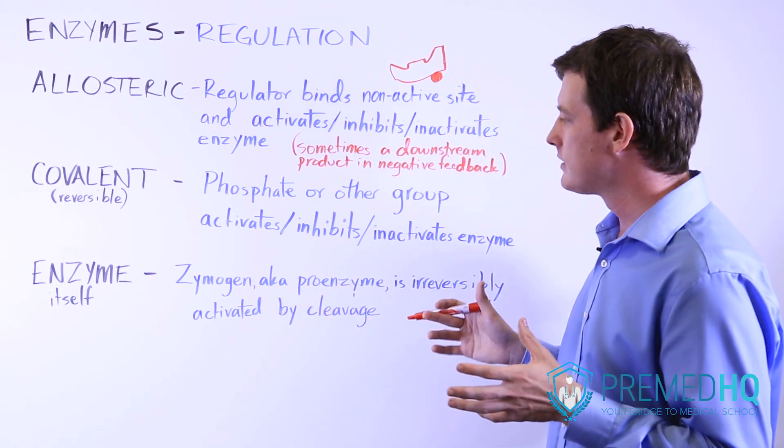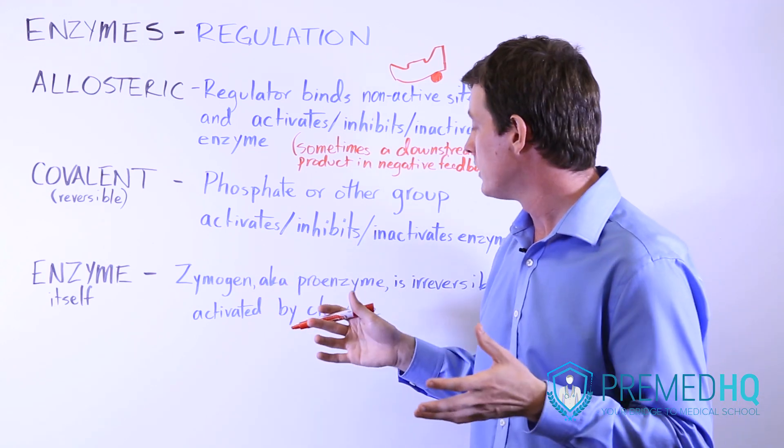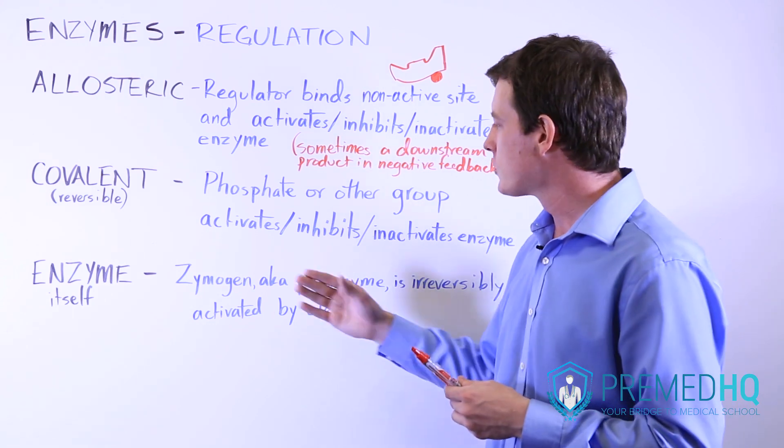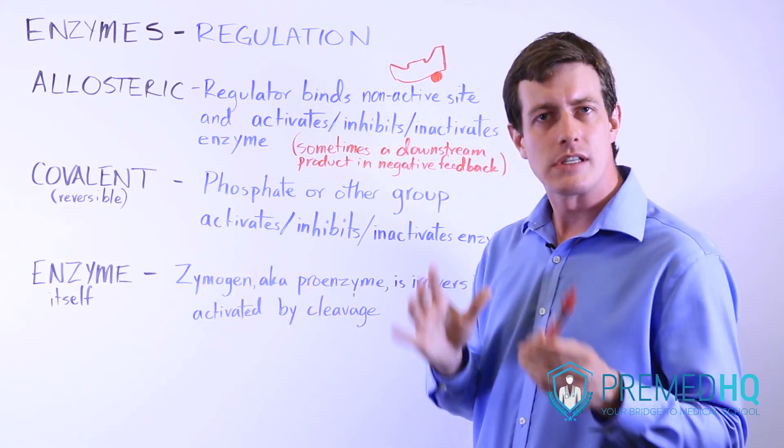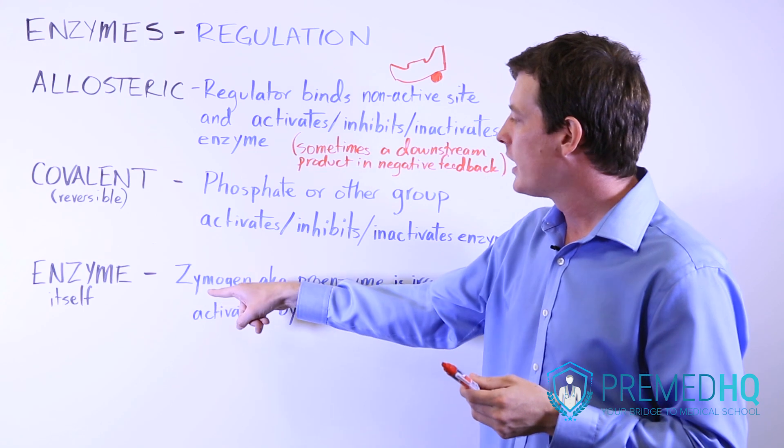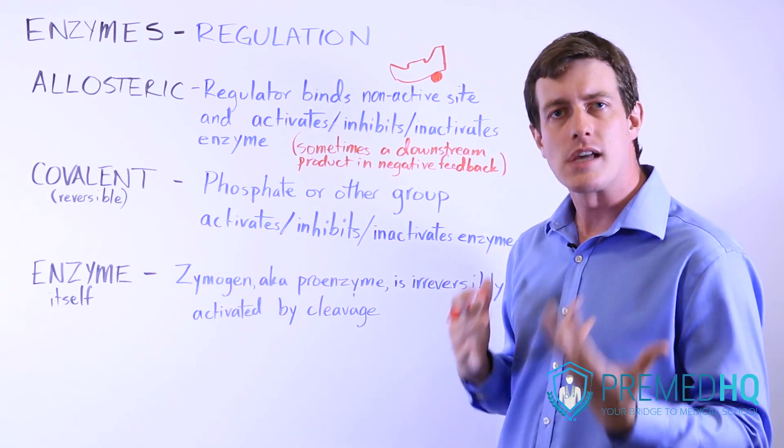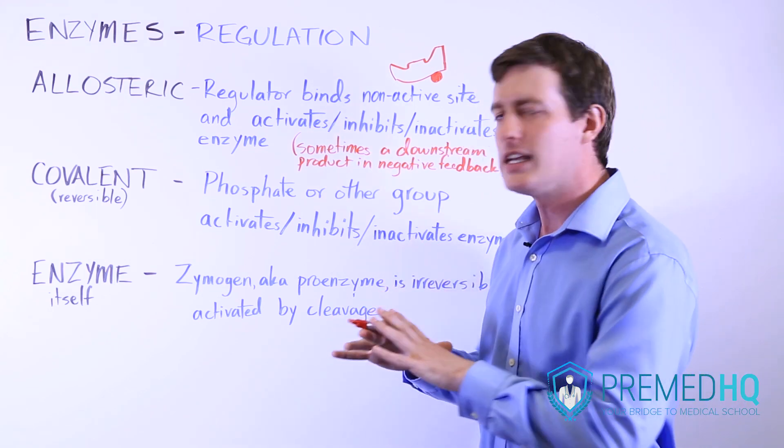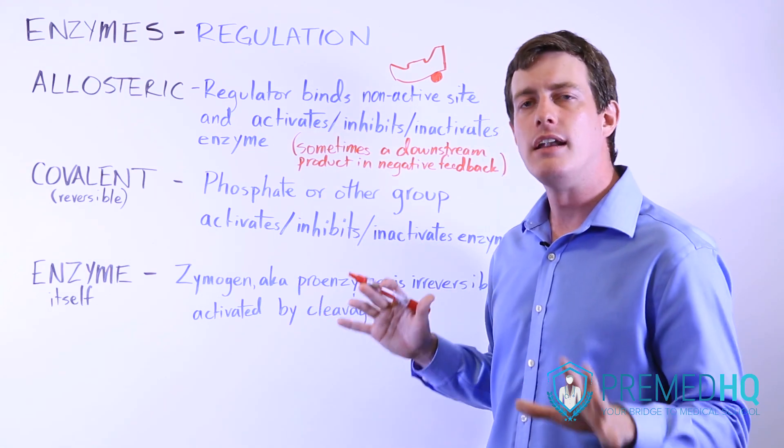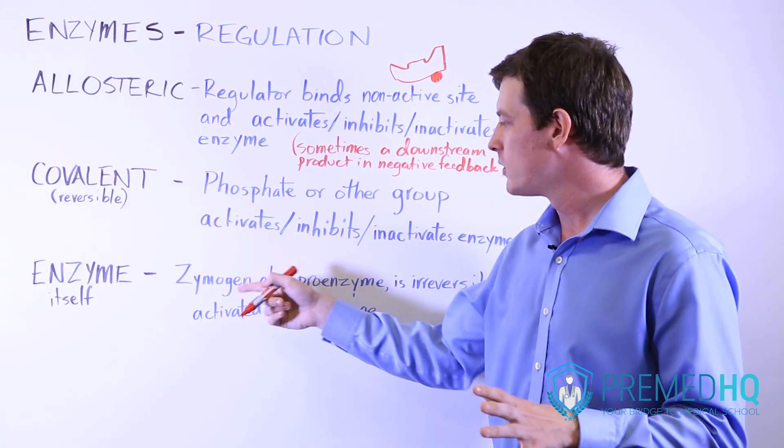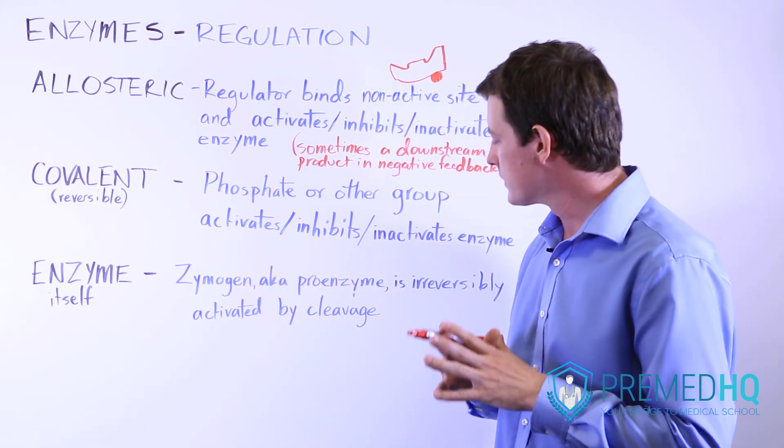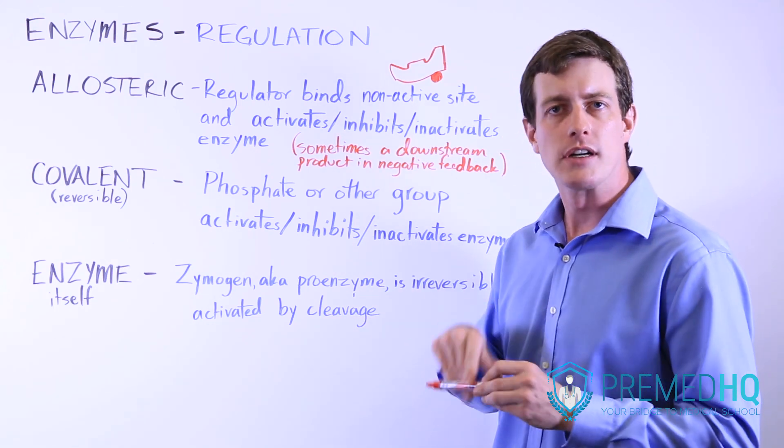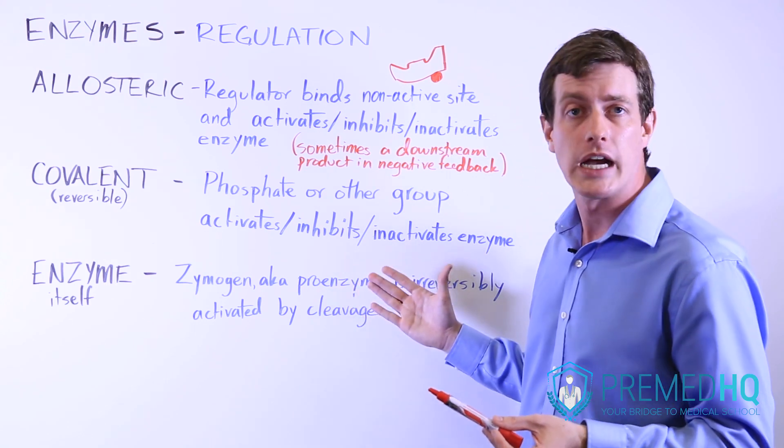And you might see that the most common one you'll see is pepsinogen, although there are many other zymogens you encounter. Many of them, like trypsinogen and other things like that, will have the O-G-E-N ending. A zymogen or proenzyme is something that is released in its inactive form, and then when you cleave that proenzyme or zymogen, it then becomes irreversibly activated and thus becomes useful for catalysis and can help facilitate different reactions.